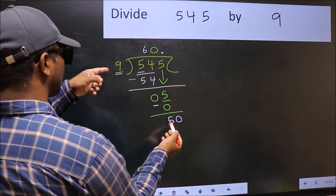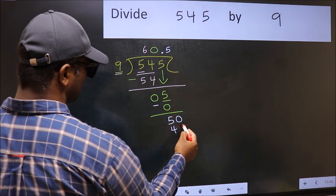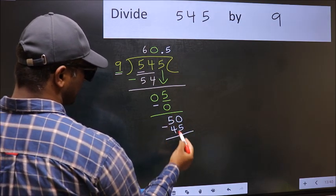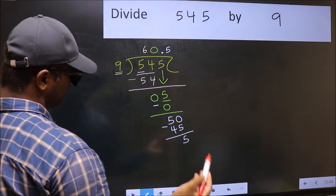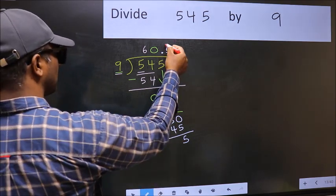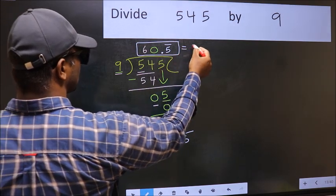A number close to 50 in 9 table is 9, 5, 45. Now you subtract, we get 5. We got 5 again. That means we get bar on this number. So this is our quotient.